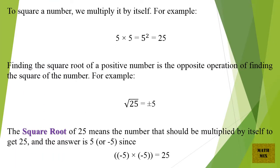To square a number, we multiply it by itself. For example, 5 times 5 equals 5 squared, which equals 25.